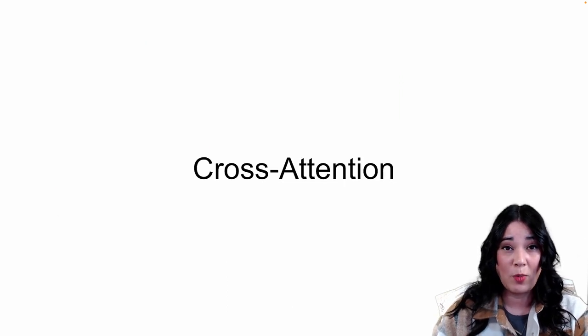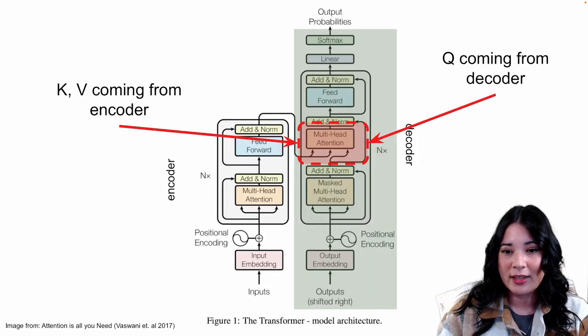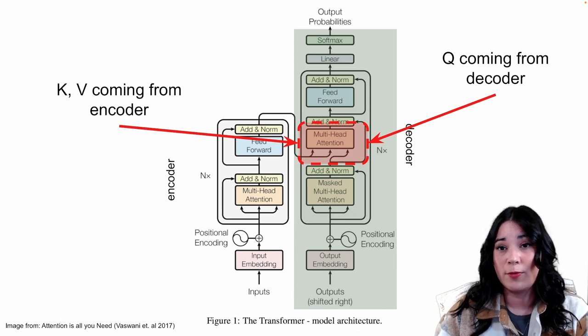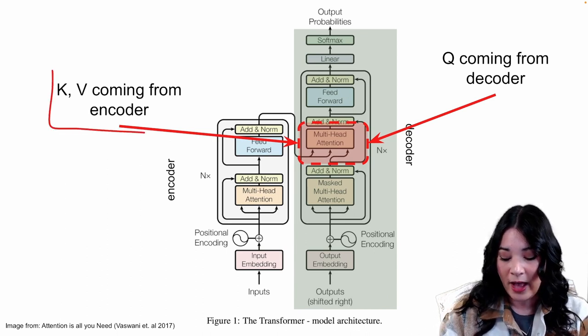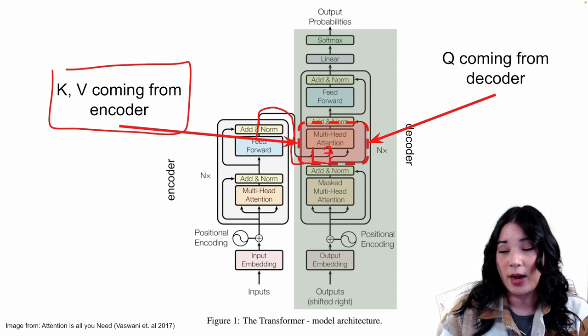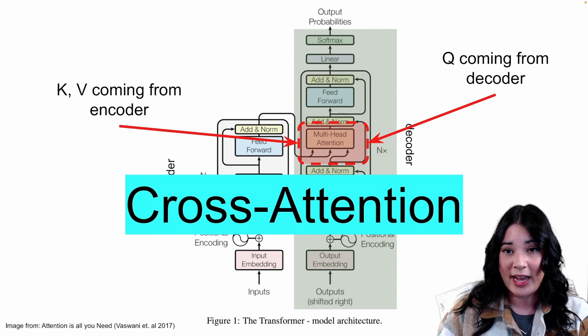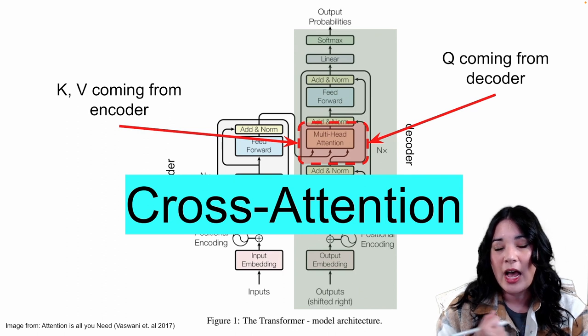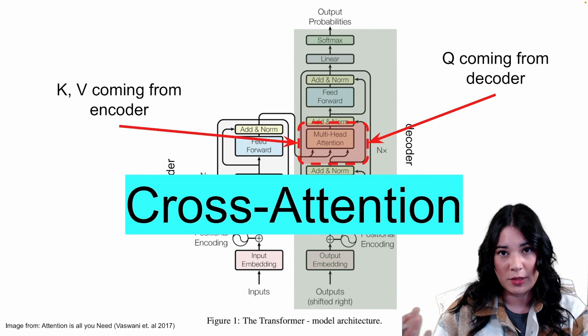Now let's talk about cross attention. You may have noticed that in our decoder, we technically have two multi-headed attention layers. In the second multi-headed attention layer, our queries are actually coming from the decoder, but our keys and values are coming from the encoder. This is called cross attention because we're combining information from the encoder's hidden representation as well as information from our decoder — the queries, the things we're looking for.